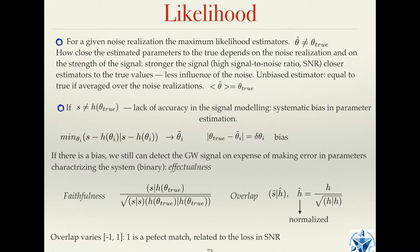Nevertheless, even if you have bias, it might not prevent you from detecting a gravitational wave signal. That's what is called effectualness. You might create a template that looks like the true signal, but at the expense of using different parameters — and for those different parameters, it looks closer to the true signal. This is called effectualness and is actually used a lot in searches.